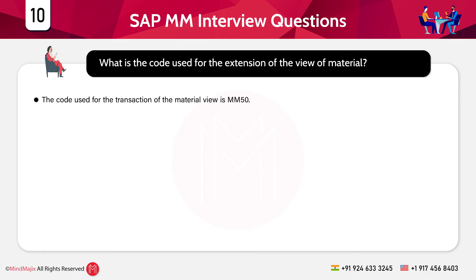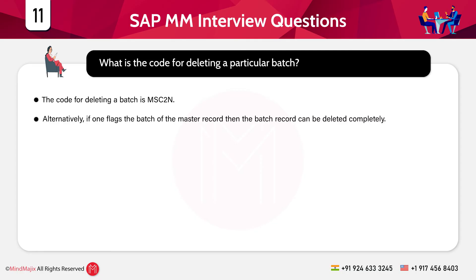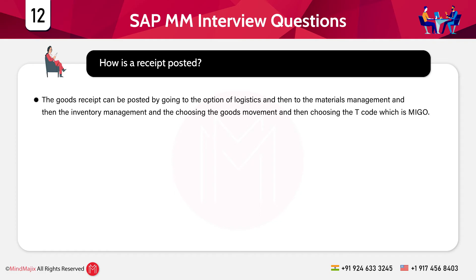The next question is: what is the code used for the extension of the material view? The transaction code is MM50. The next question is: what is the code for deleting a particular batch? The code is MSC2N. Alternatively, if one flags the batch in the master record, the batch record can be deleted completely. For posting a goods receipt, go to Logistics, then Materials Management, then Inventory Management, choose Goods Movement, and then select T-code MIGO.